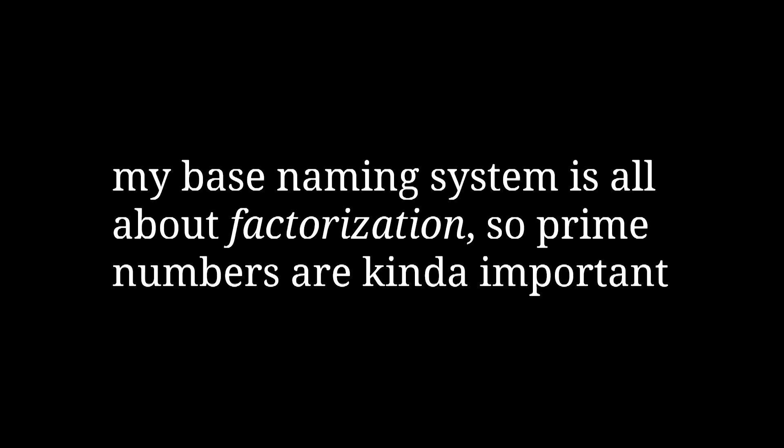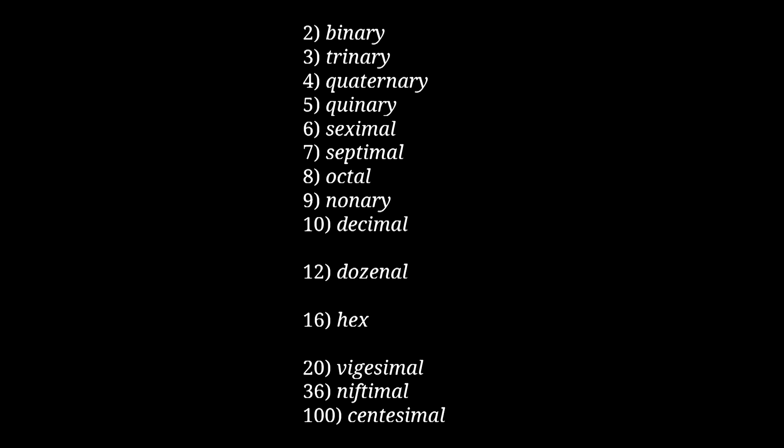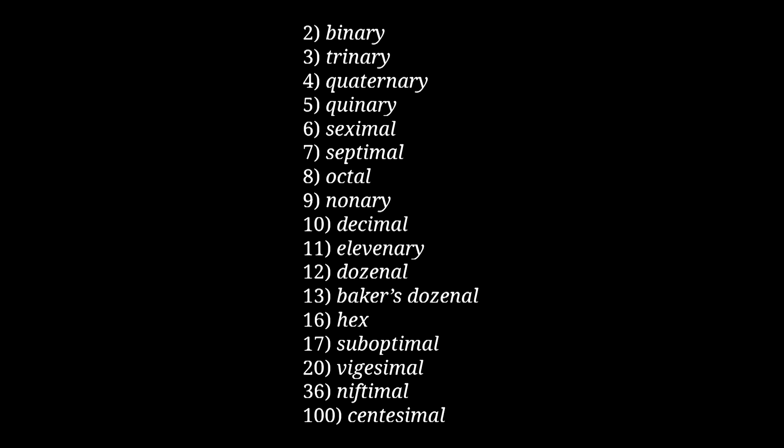As I'll talk about soon, the core of this base-naming system uses factorization, and prime numbers are pretty important to it. So the final set of root names are used specifically for prime-numbered bases. Base 11 is elevenary, obviously from the English word eleven. Base 13 is baker's dozenal, as in a baker's dozen. And finally, base 17 — a base which would be very impractical to use — is called suboptimal. Some people have pointed out that this name sounds like it's saying base 18 is the optimal base, which isn't the intention, but oh well.